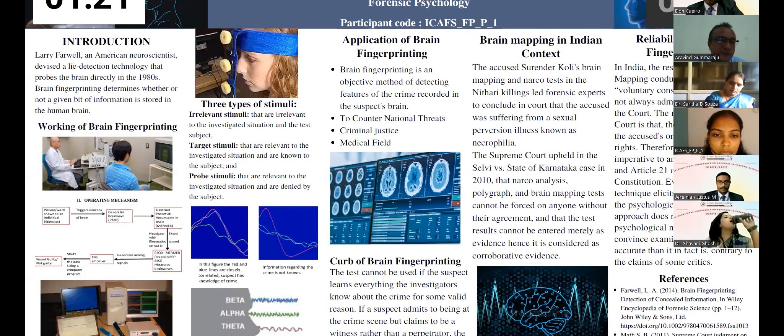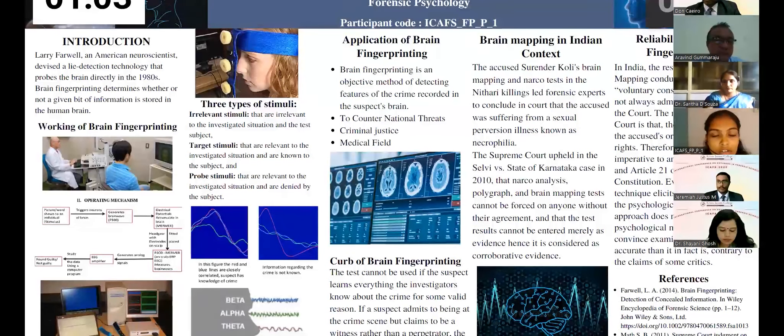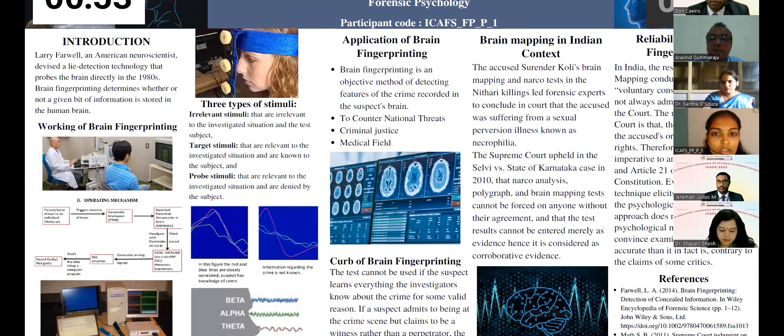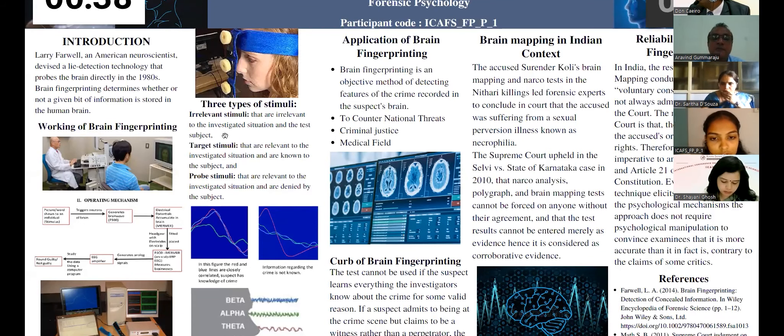Hence, the reliability of brain fingerprinting comes into question. So, in India, the results from brain fingerprinting conducted with the voluntary consent of the subject are not always admitted as evidence in the court. The main reason being that the test infringed the accused or witness's basic rights. Therefore, it accuses the right against self-incrimination provided under Article 20 subclause 3 of the Indian Constitution, according to which no person accused of an offense shall be compelled to be a witness against himself or herself. And the second right is the right to life and personal liberty provided under Article 21. Hence, it becomes imperative to analyze these two articles in the Indian Constitution. Thank you.